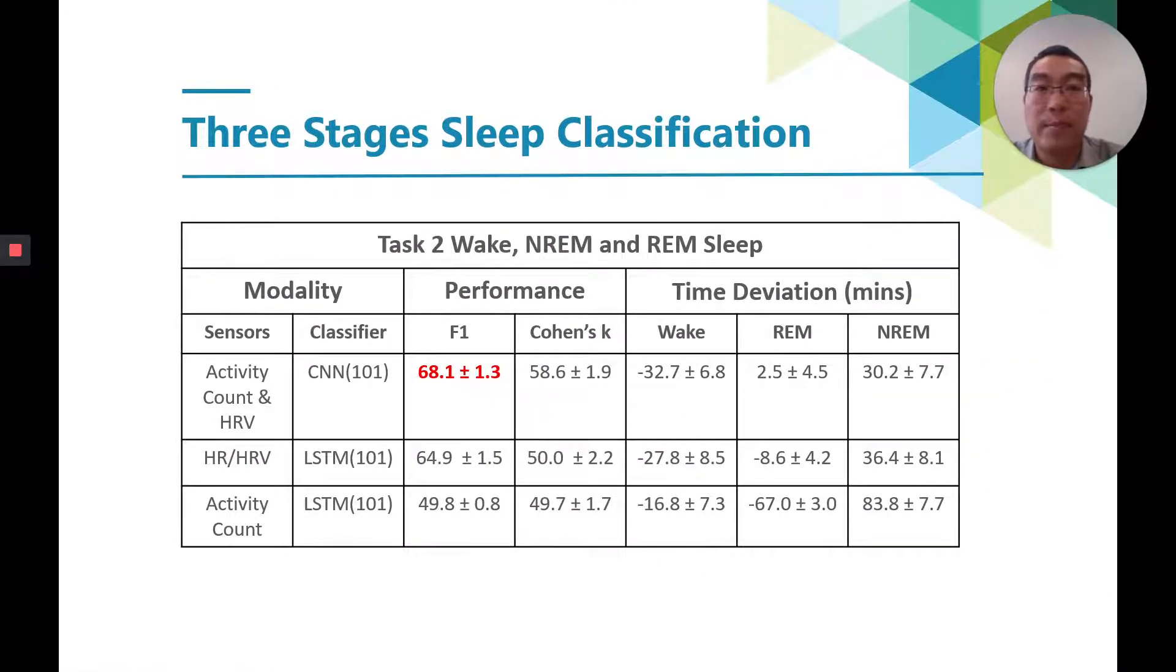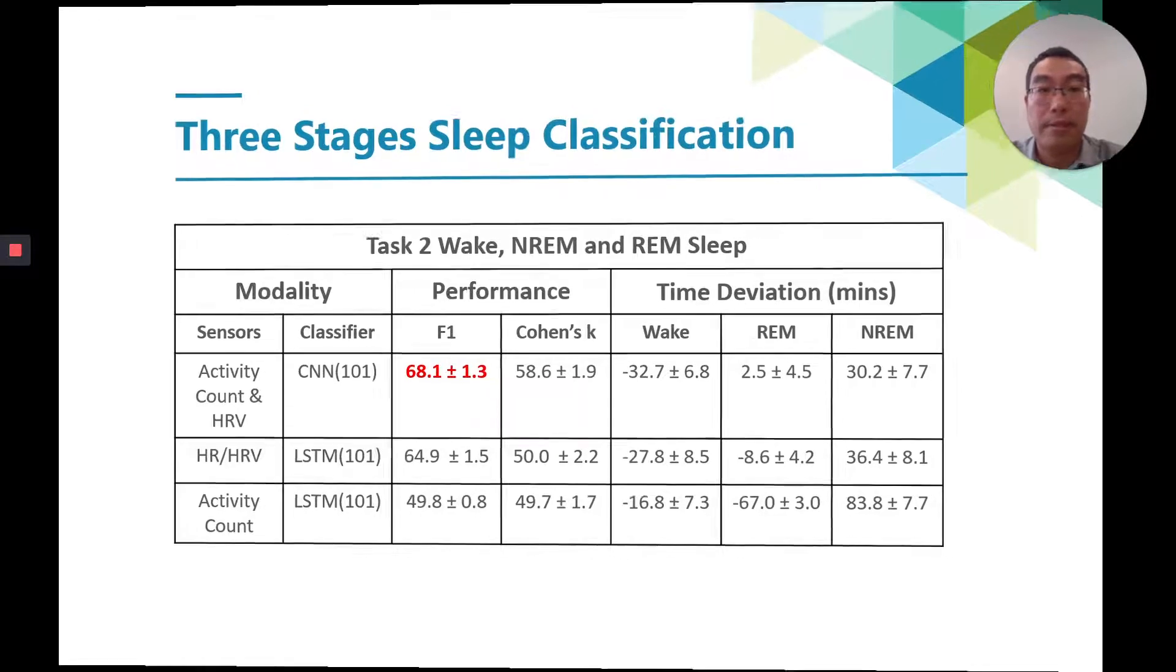In this table, we highlighted the best-performing algorithms for three-stage sleep classification from different modality combinations. As we can see from the table, the best-performing algorithm is CNN-191 based on 50.5-minute window lengths.